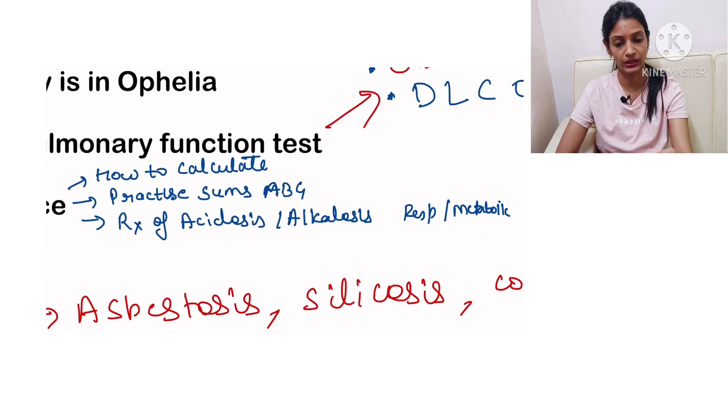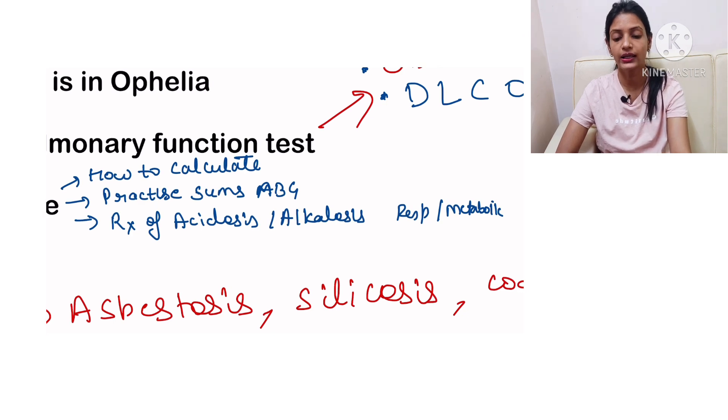They cannot make the paper without this topic. You must be knowing how to calculate, then practice some ABG. You have to calculate and diagnose whether it is metabolic acidosis or alkalosis or respiratory, or whether they have compensated or not, then you must be knowing the treatment for them.